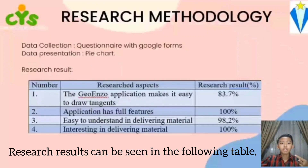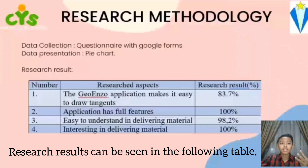Research results: number one, the geo-enzoification makes it easy to draw tension — 83.7%; number two, the application has full features — 100%; number three, easy to understand in delivering material — 98.2%; and number four, interesting in delivering material — 100%.